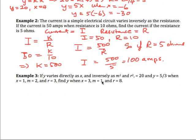Next one is a little bit more complicated. Let's suppose that y varies directly as x and inversely as m squared and r squared. So there's our general formula: y equals k x over m squared r squared.